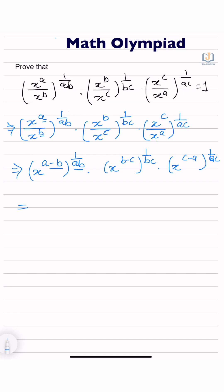So we get x to the power a minus b upon ab, into x to the power b minus c upon bc, and x to the power c minus a upon ac.